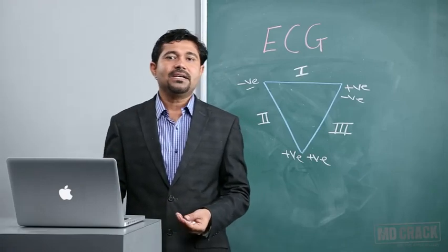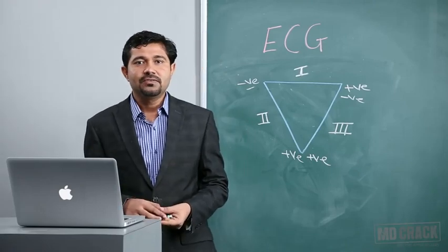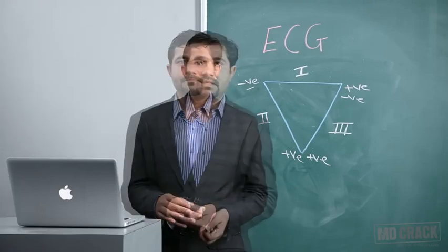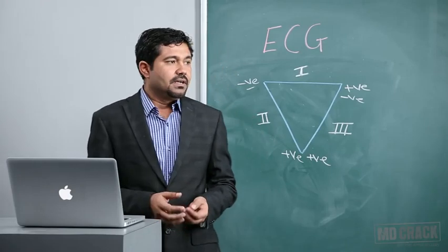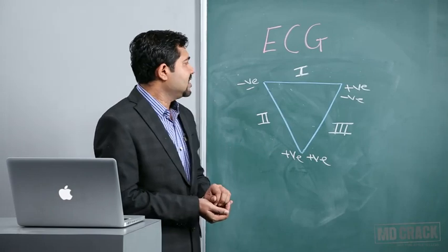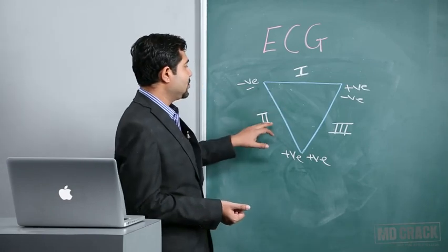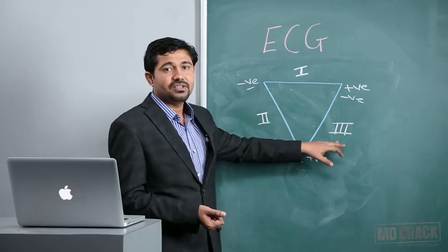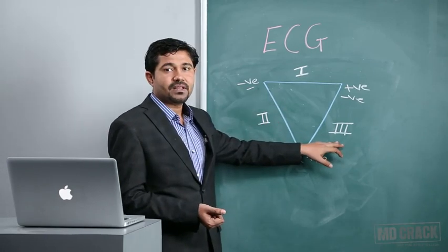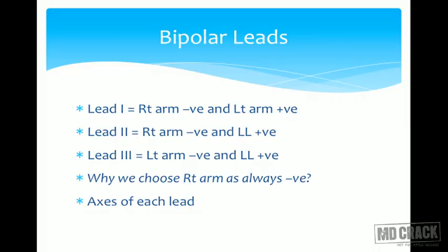Hello student, welcome back to the session of ECG. These are called the bipolar leads — Lead 1, Lead 2, and Lead 3 — because they record the potential difference between two points. Therefore, they are called the bipolar leads.